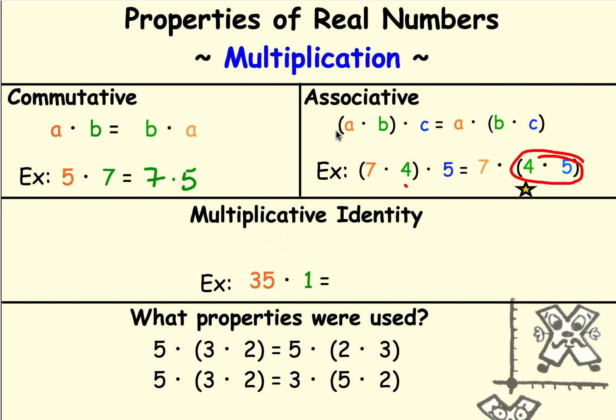So the associative property for multiplication says that when you're multiplying a set of numbers and only multiplying, I can group the numbers so that I multiply any group of two numbers first.